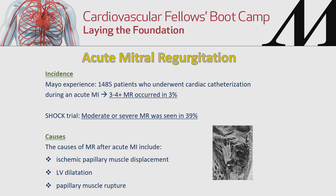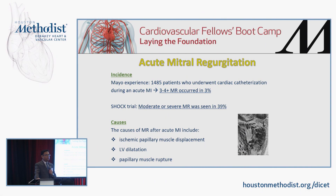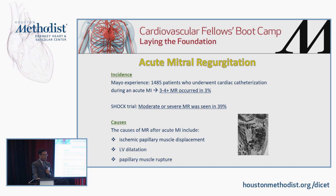Acute mitral regurgitation is another mechanical complication of myocardial infarction. In a large Mayo Clinic experience, approximately 3% of patients developed significant mitral regurgitation following acute MI. In the SHOCK trial, 40% of patients with acute MI and shock had moderate to severe mitral regurgitation. Causes include ischemic MR, papillary muscle rupture, and LV dilatation.